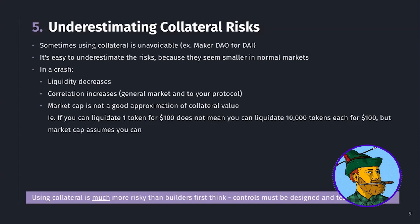Also in market crashes, market cap becomes less of a good approximation for collateral value. Market cap assumes that if you can sell one token for $100, you can sell 10,000 tokens each for $100. In realistic market conditions, you're going to have slippage, meaning you'll get a lot less than $100 per token on average. All these factors get worse in a market crash, so collateral can be much riskier than builders first think. You need controls in place that are rigorously tested to make your protocol resilient. A great example is the Mango Markets exploit — it wasn't a hack, it was an exploit of economic vulnerability created by underestimated collateral risks and insufficient controls.